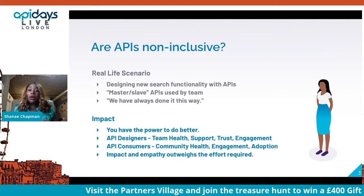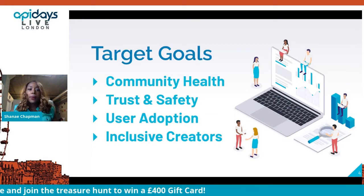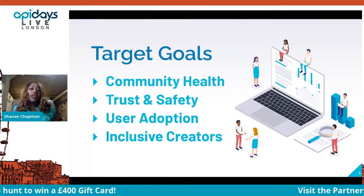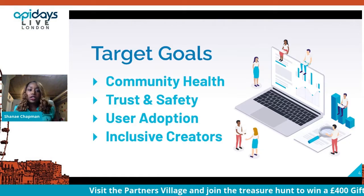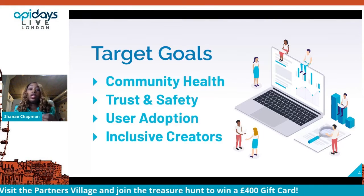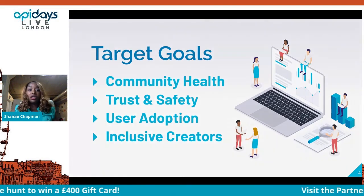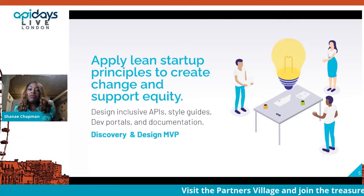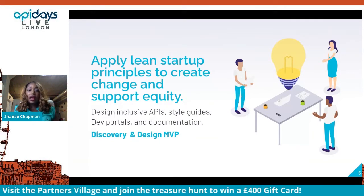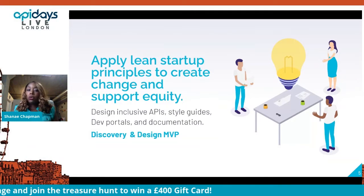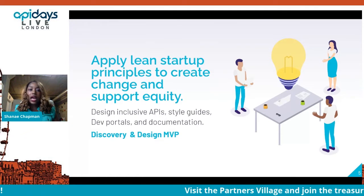Some of the target goals with having inclusive APIs: community trust and safety — some of those emotional, empathy-driven feelings and communications that help with user adoption — and also encouraging inclusive creators, inclusive API designers, and consumers as well. We're going to step into some guiding principles in creating these inclusive APIs — how do we actually practice this — and we'll tap into some case studies and discover what is already in our industry.